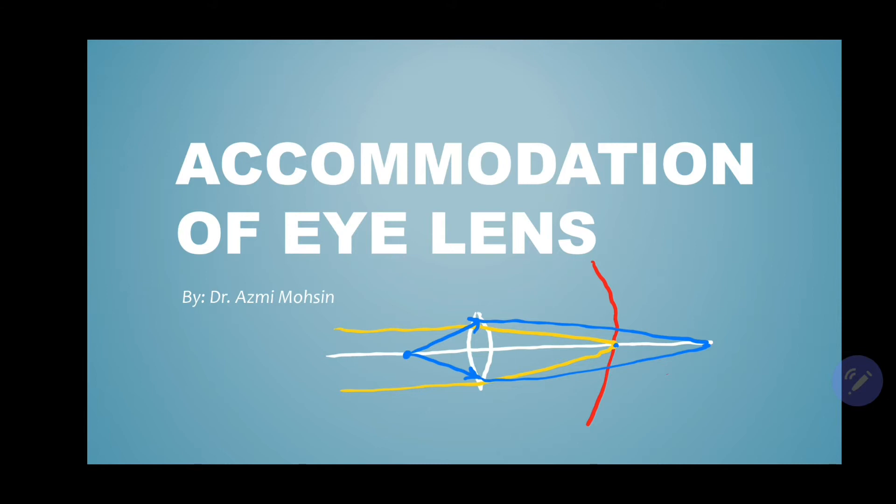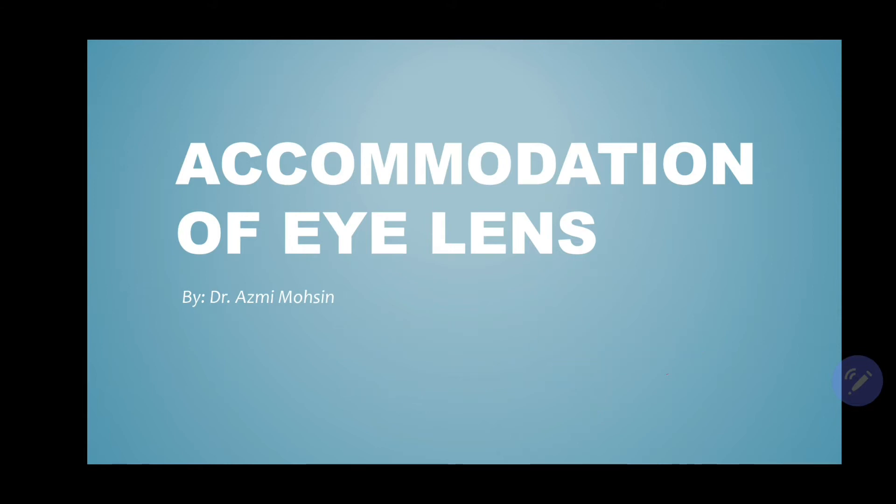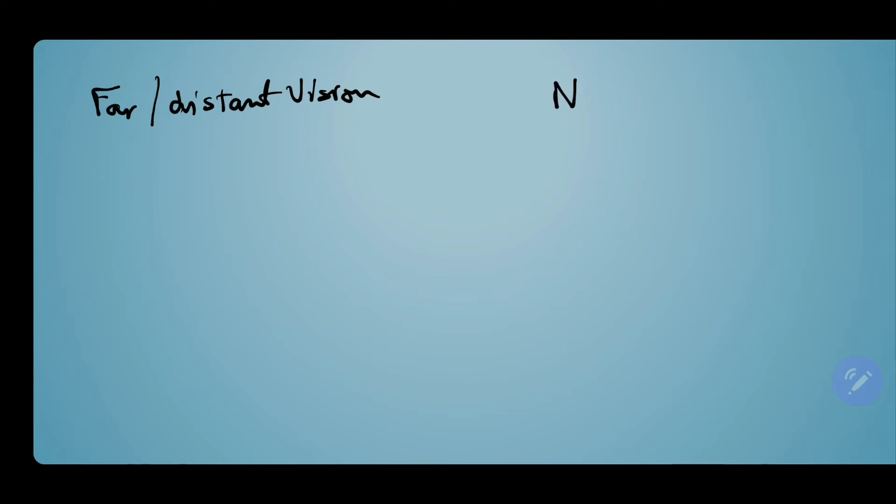That is the requirement for accommodation. Now let's start a diagram to explain the accommodation of the eye lens in close vision and in far vision — one diagram for far or distant vision, and one for near or short vision.